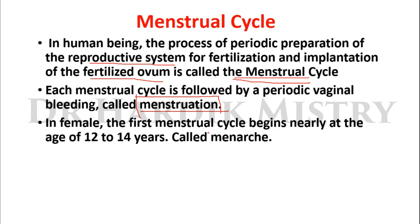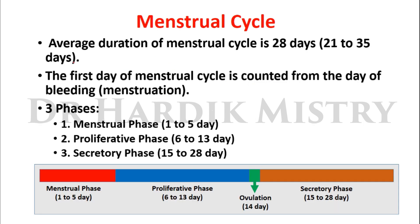The first menstrual cycle begins nearly at the age of 12 to 14 years, and this event is known as menarche. Starting from 12 to 14 years, the menstrual cycle runs throughout life up to 50 to 60 years, and when the menstrual cycle stops it is known as menopause.